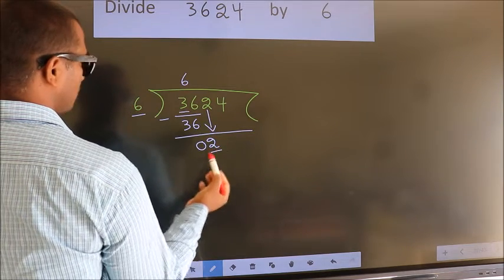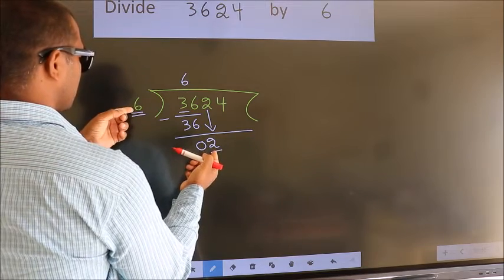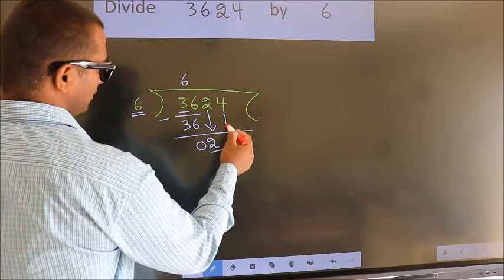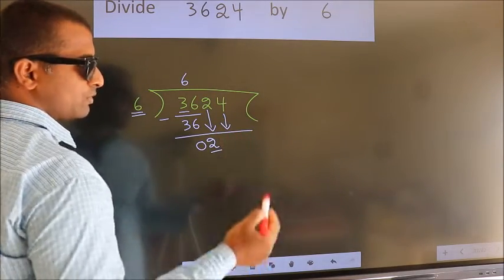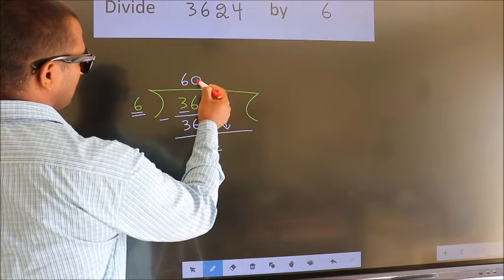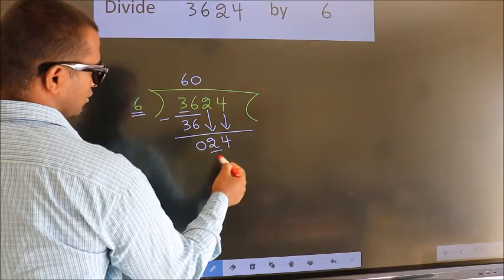Here we have 2, here 6. 2 is smaller than 6, so we should bring down the second number. And the rule to bring down the second number is: put 0 here. Then only we can bring down this number. So, 24.